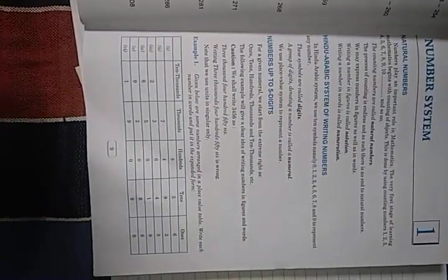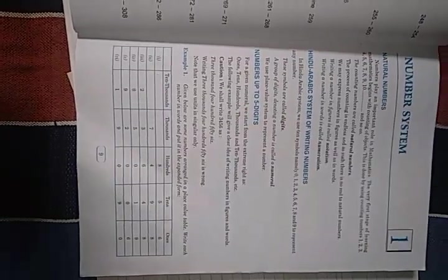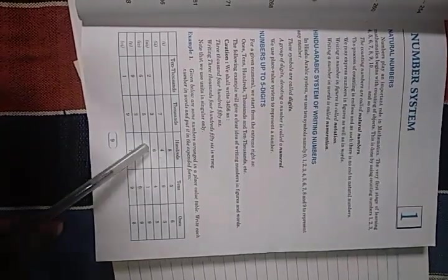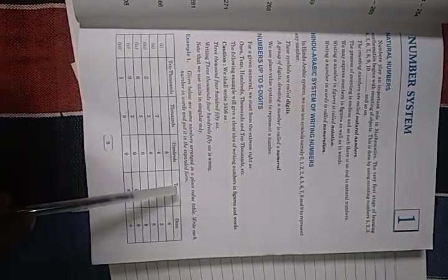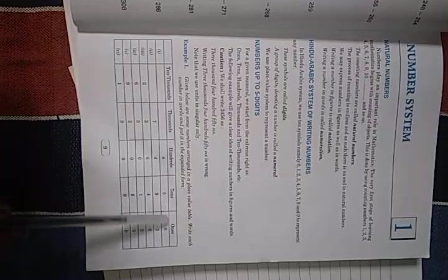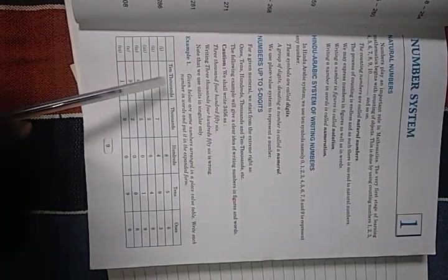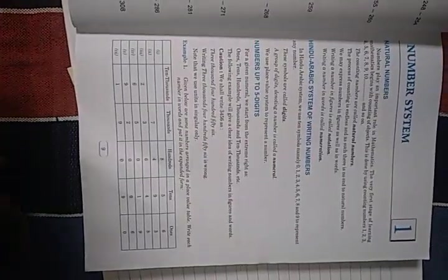Now we discuss about numbers up to five digits. Let us discuss about the place value chart. Starting from the extreme right: ones, tens, hundreds, thousands, and ten-thousands — these are the different places for up to five digits. For example, the numeral nineteen thousand ninety — if you write it in words: nineteen thousand ninety.